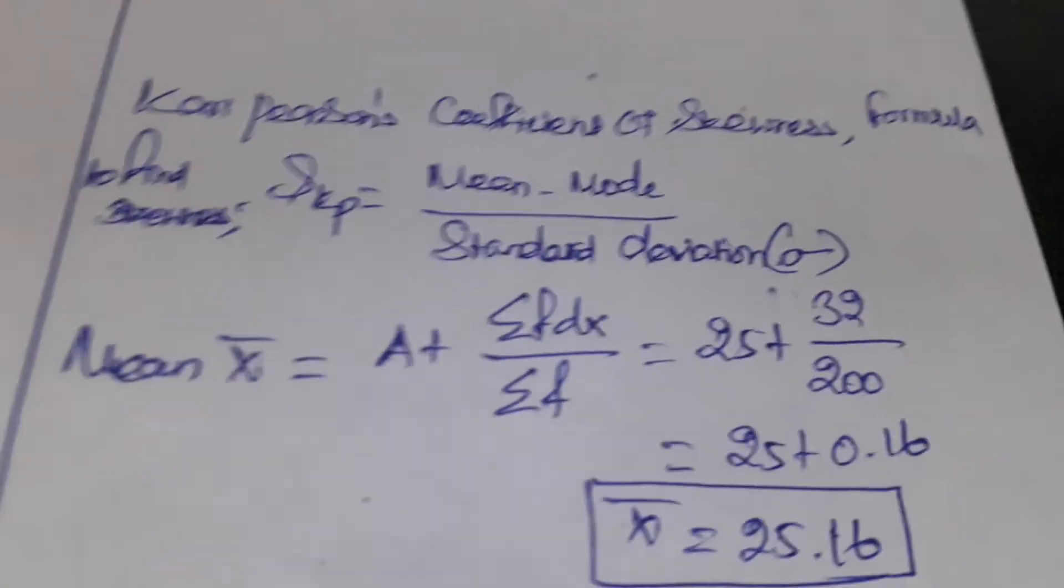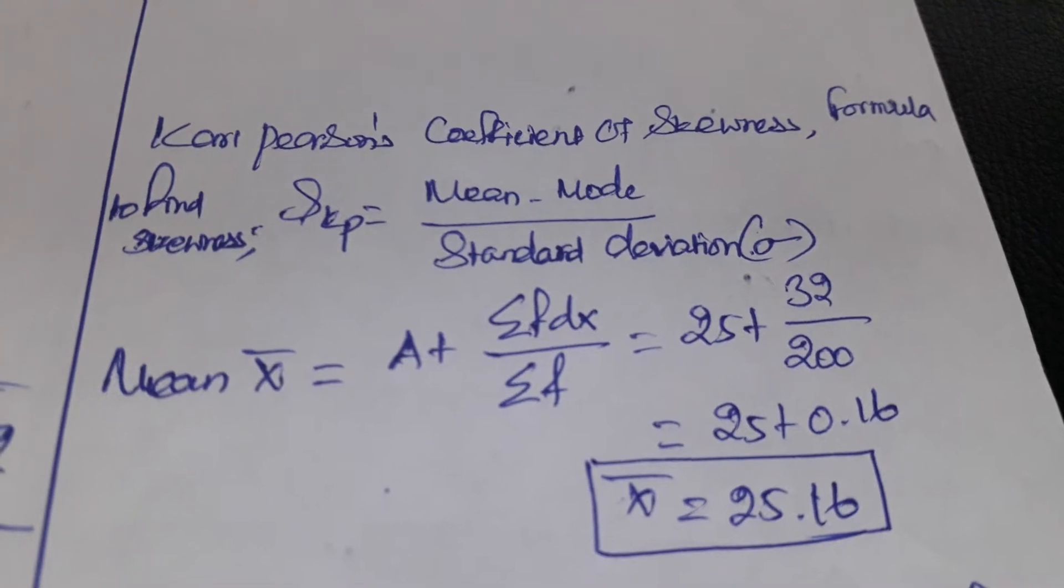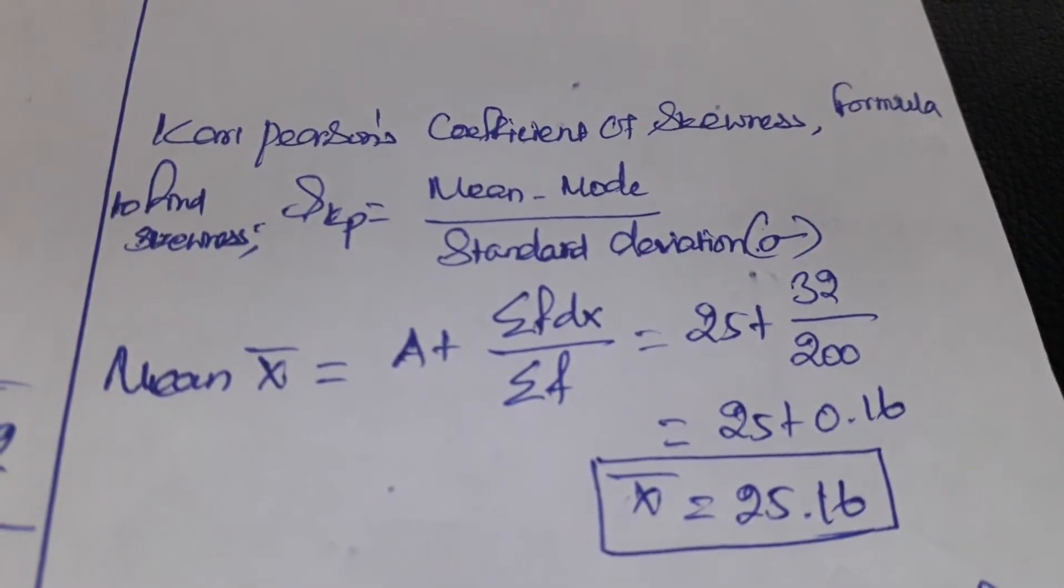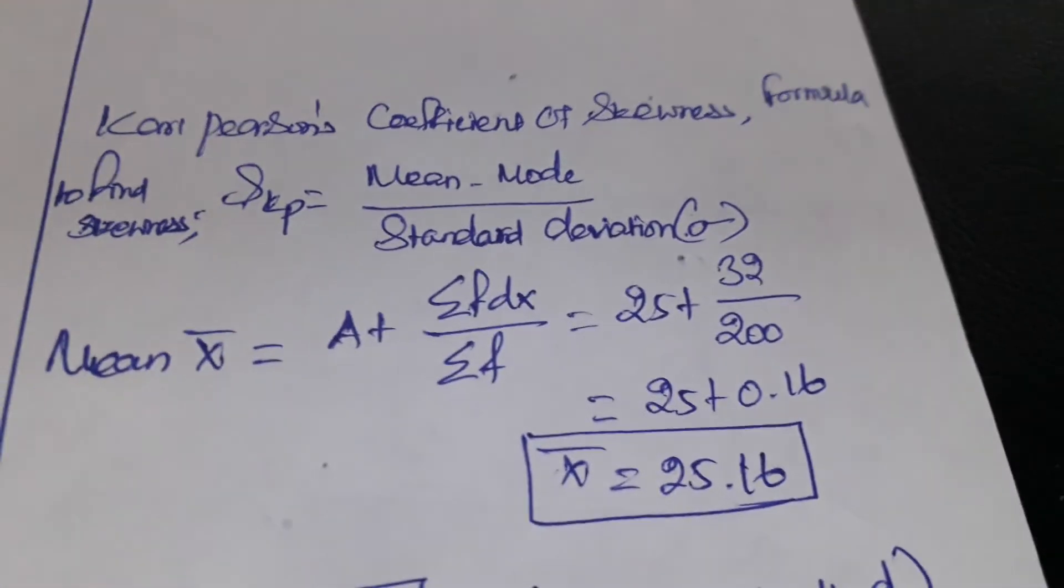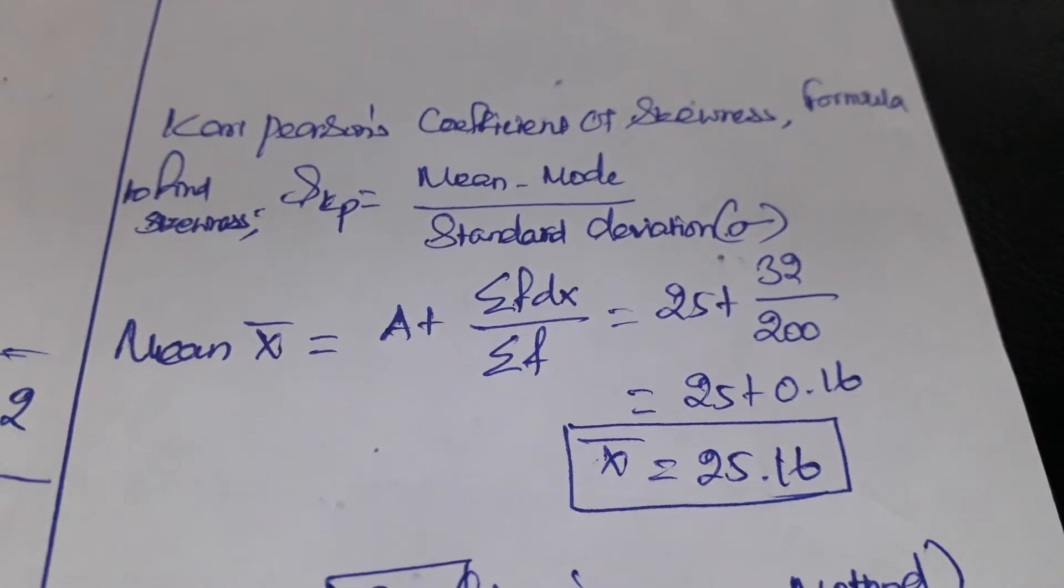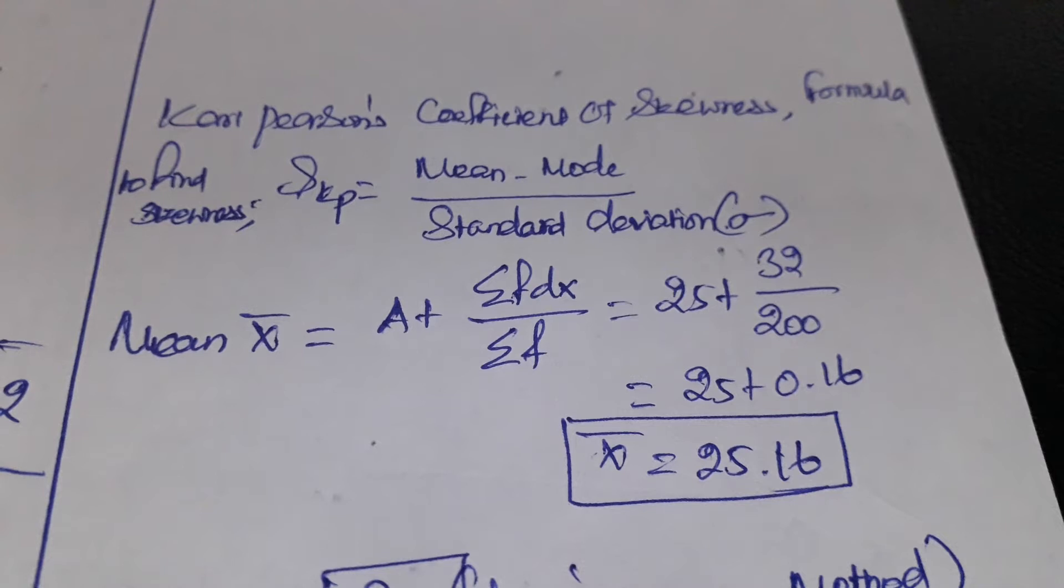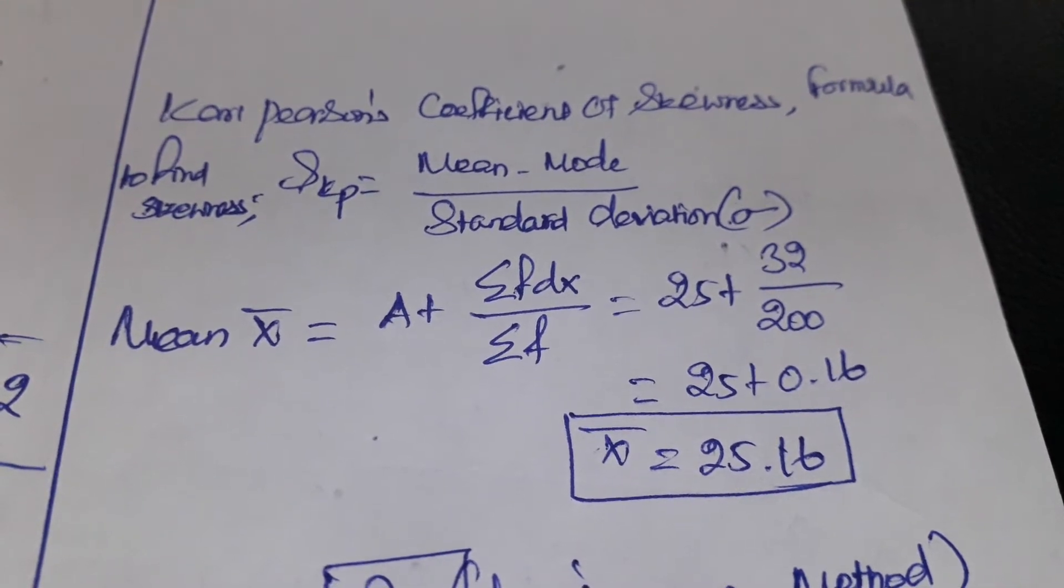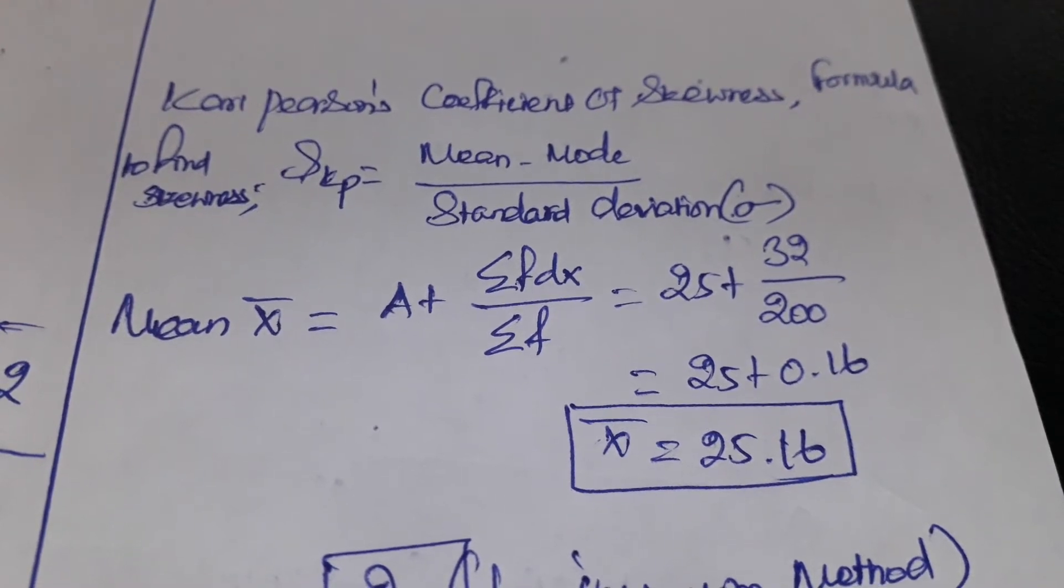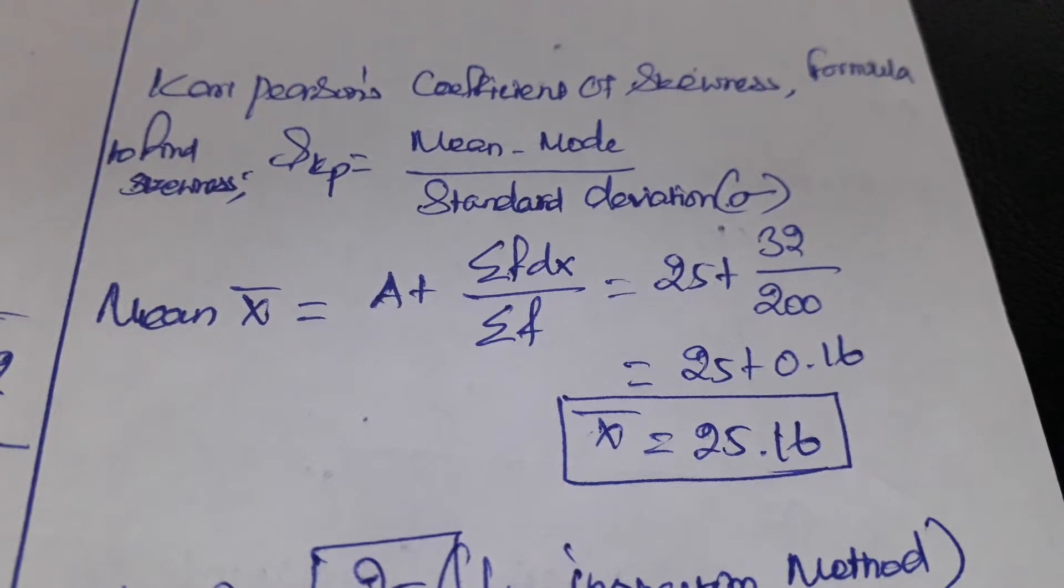Once we have done the tabulation, moving forward to apply the formulas. First we need to write the formula of Karl Pearson's coefficient of skewness, Sk. The formula is mean minus mode divided by standard deviation.